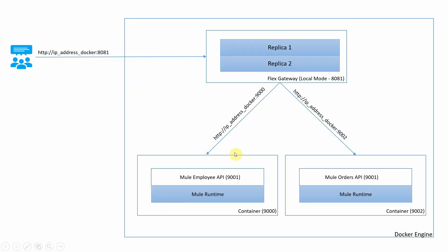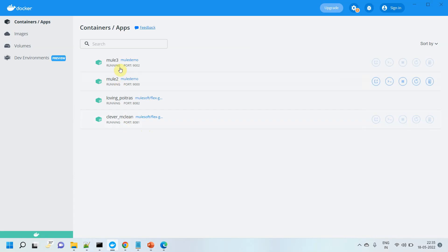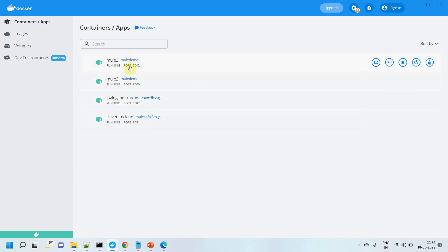The next setup we are going to do involves multiple instances of API, or multiple containers, where separate APIs are running. I have one container running on port 9000 with the employee API on port 9001, which we've already seen. Now I have another container running on port 9002, which is running a Mule orders API on port 9001. Generally we cannot access the API on port 9001 directly; we have to access it via the container port. In this setup, we already have a Flex Gateway with four replicas in local mode. The Flex Gateway will authenticate the request using basic authentication, and depending on the resource path in the request, it will route to either the employee API or the orders API.